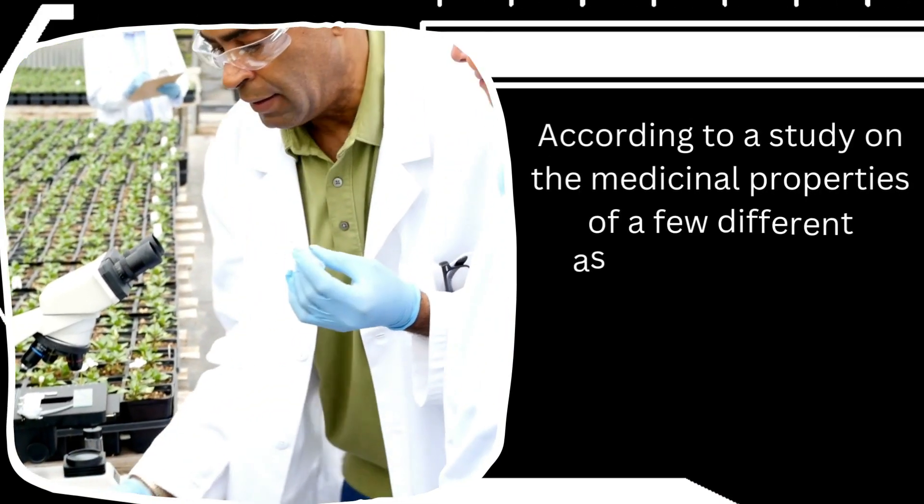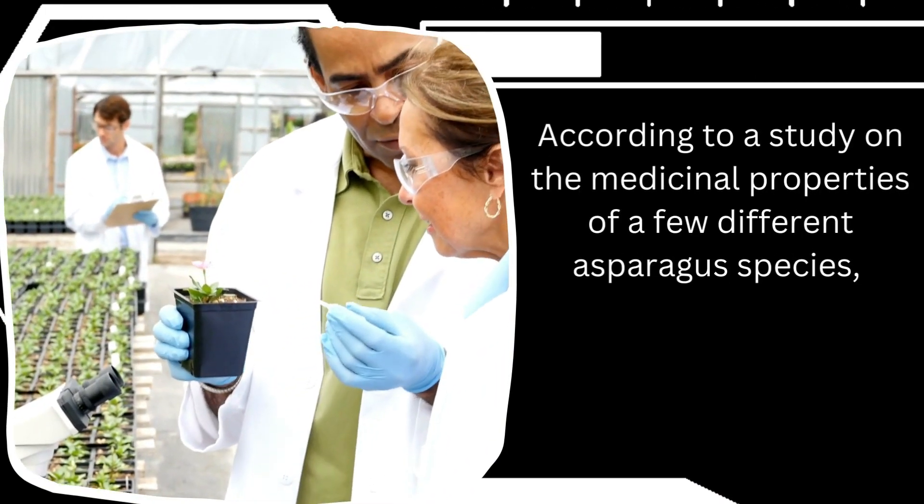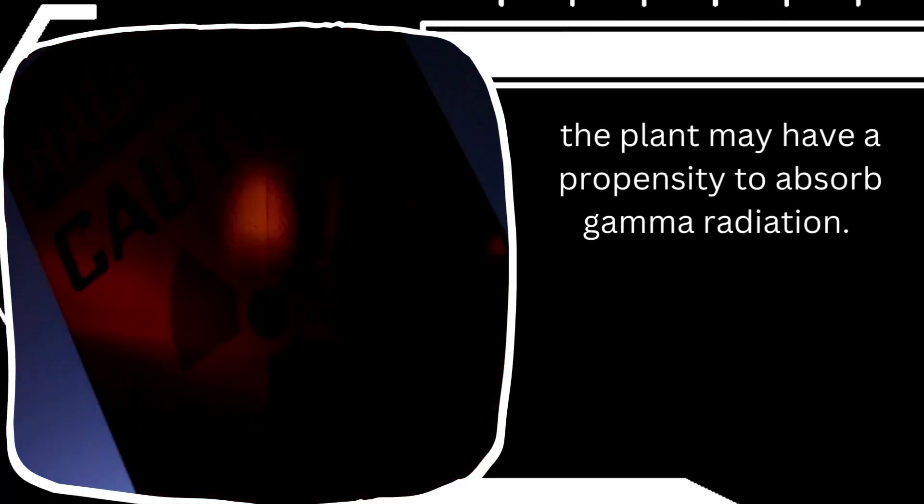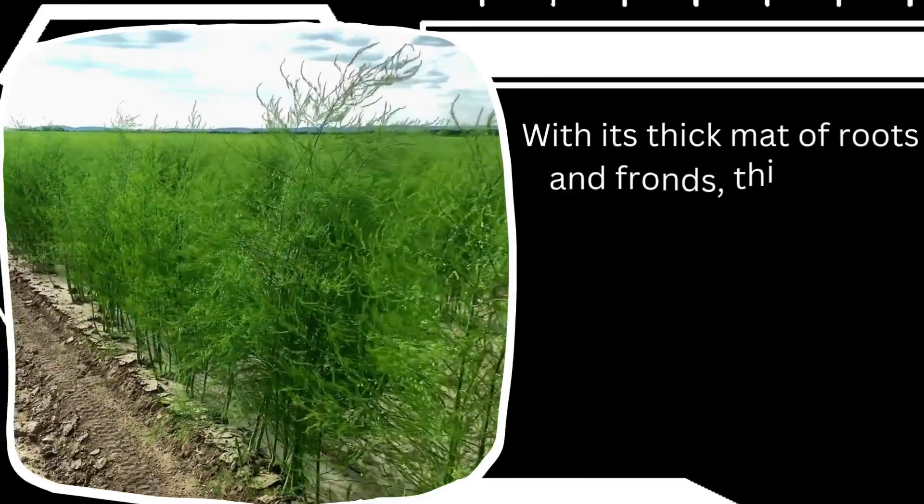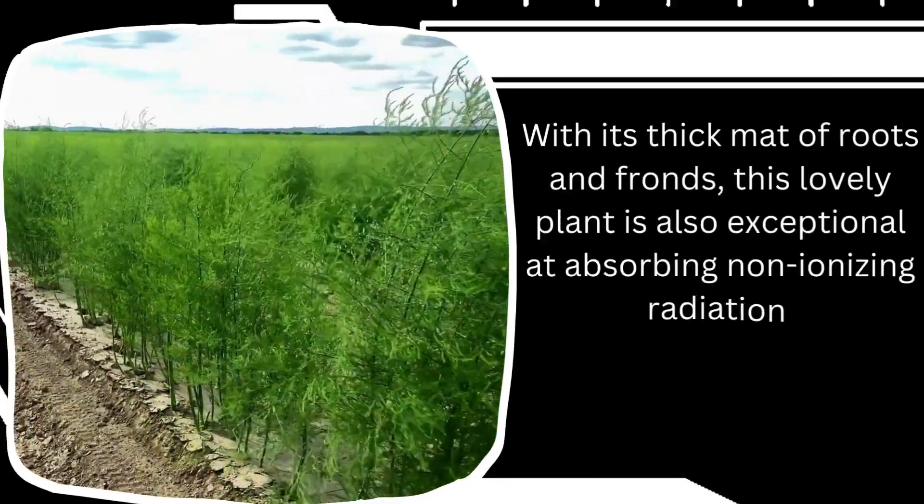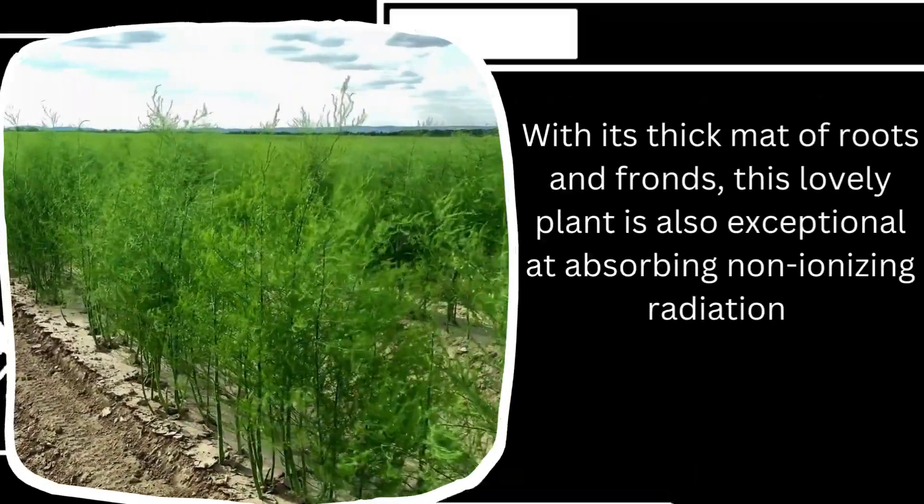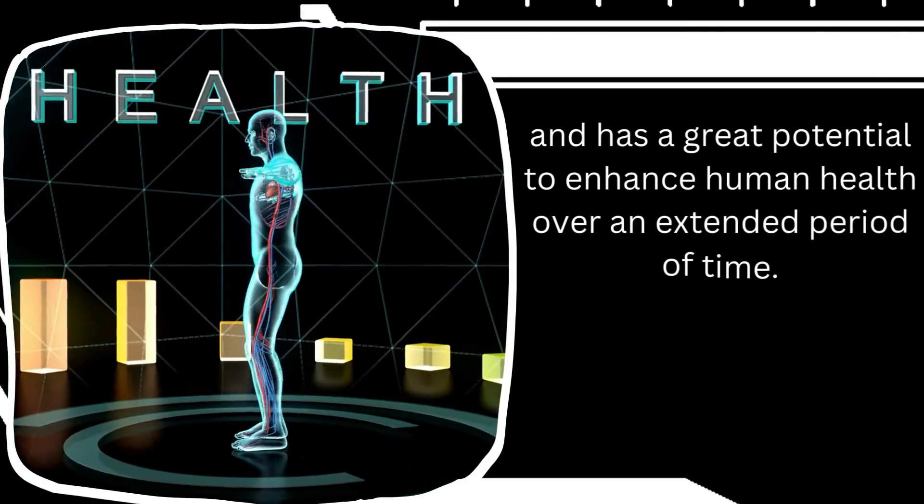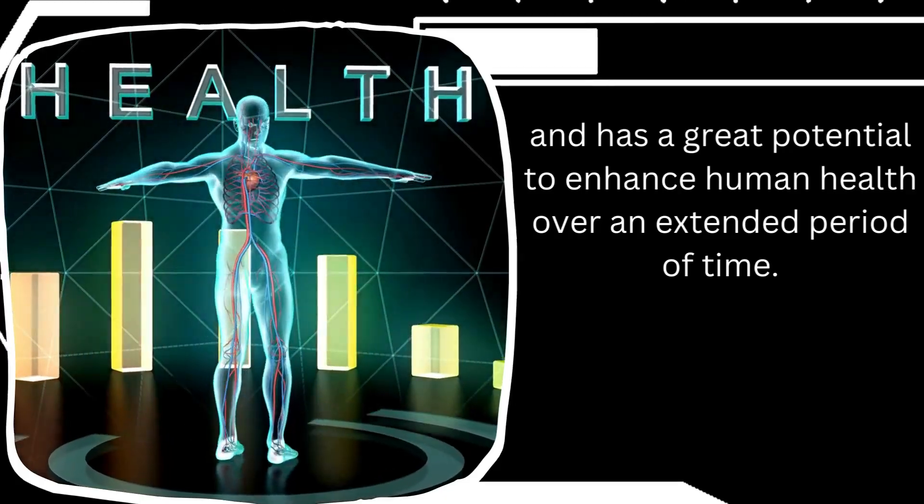According to a study on the medicinal properties of a few different asparagus species, the plant may have a propensity to absorb gamma radiation. With its thick mat of roots and fronds, this lovely plant is also exceptional at absorbing non-ionizing radiation and has great potential to enhance human health over an extended period of time.